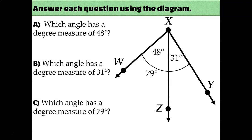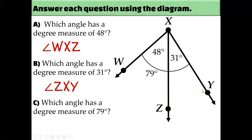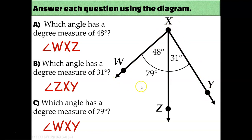Let's see how you did. Which angle has a measure of 48 degrees? That would be angle WXZ — or you could also call it angle ZXW. I can tell this is the one with the 48 degree angle because the 48 degrees is inside of this angle close to the vertex. Which angle has a degree measure of 31? That would be angle ZXY, or you could call it angle YXZ, because 31 degrees is inside of that angle close to the vertex. Whereas this 79 degree angle, although it's inside of this angle, it's not by the vertex — it exits by this arc. That arc goes all the way from ray XW to ray XY, so the 79 degree angle is marking angle WXY or YXW as being 79 degrees.